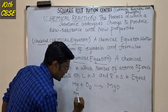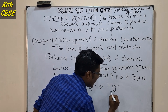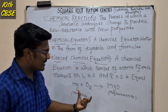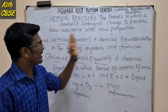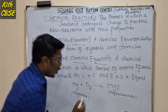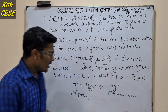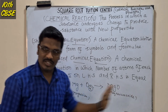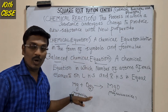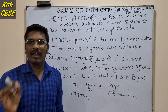Mg means magnesium, and MgO means magnesium oxide. So this is what we call the skeletal chemical equation. This is an example of a skeletal chemical equation.